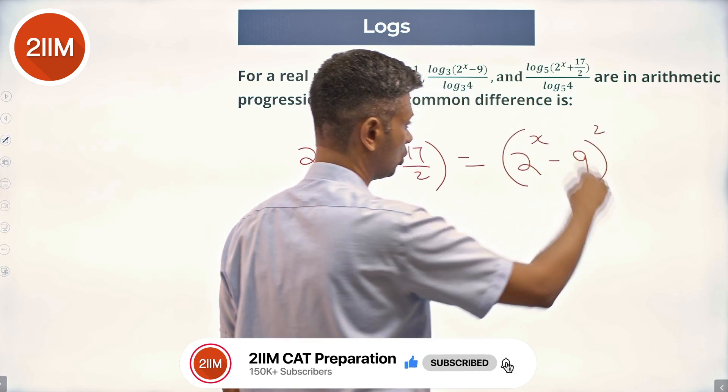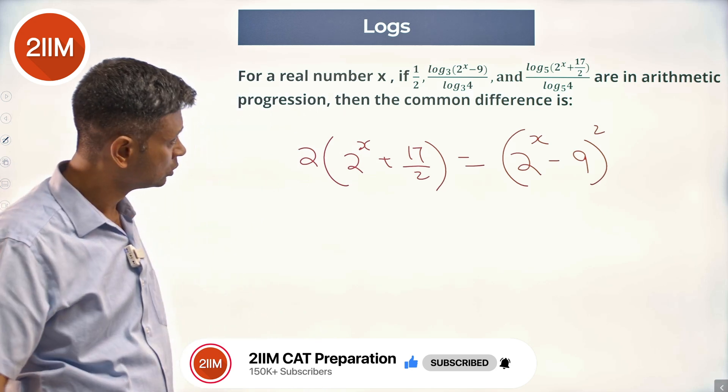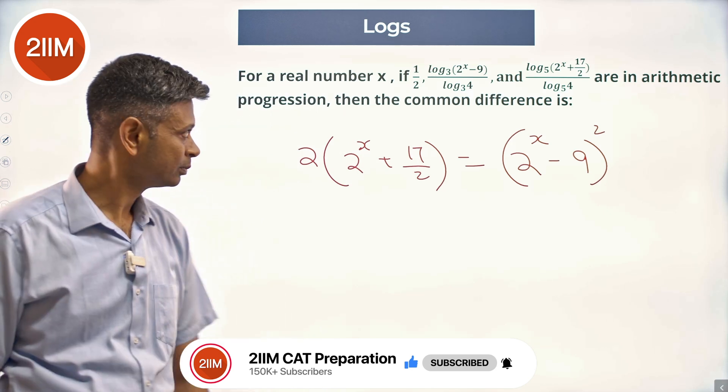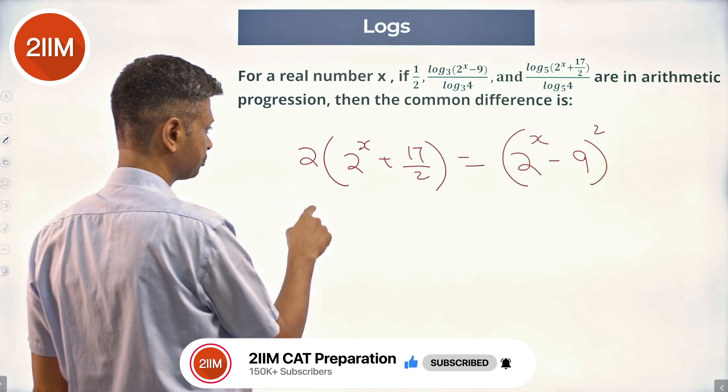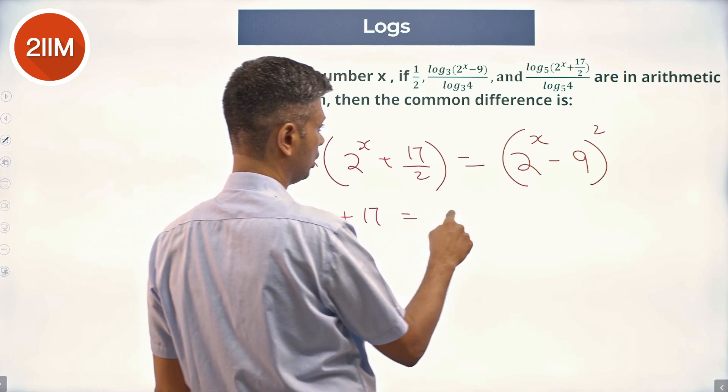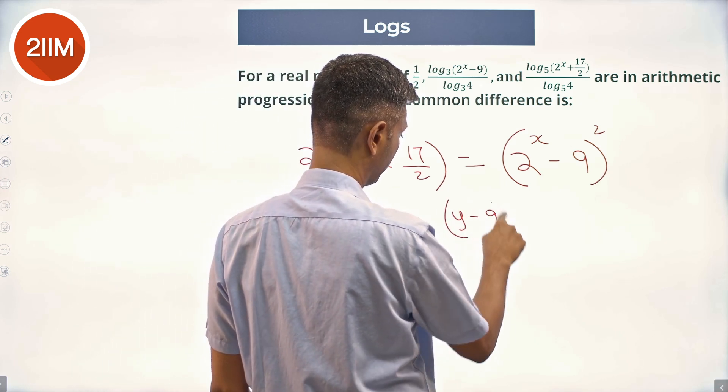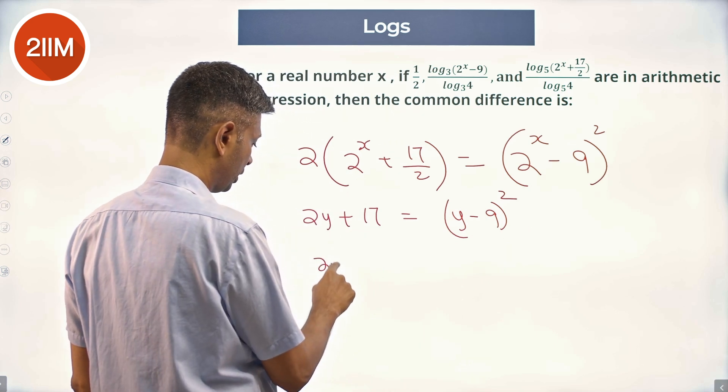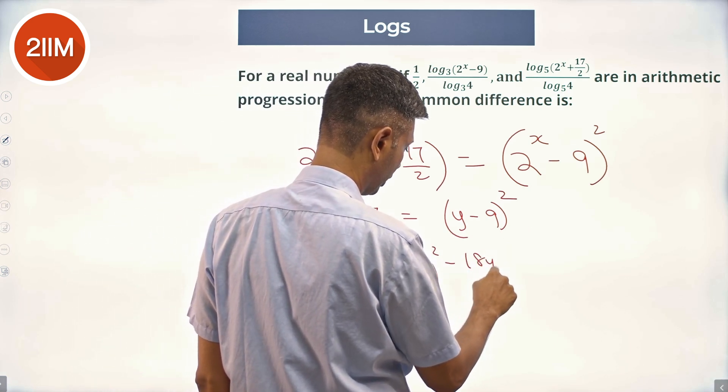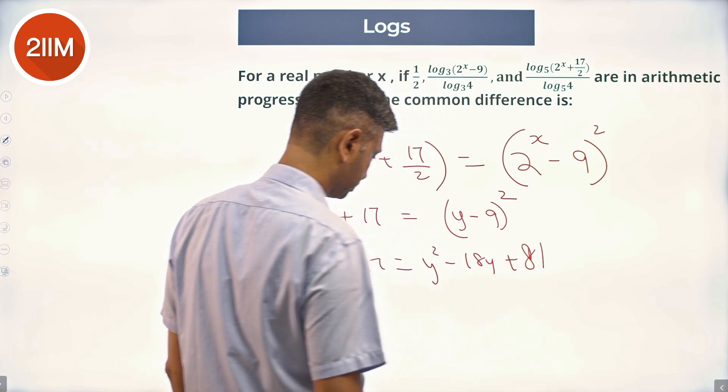I'm going to call 2^x as y, so this is (y - 9)². So 2y + 17 = y² - 18y + 81.